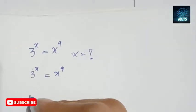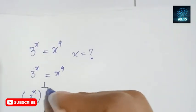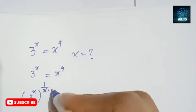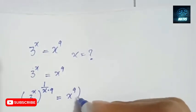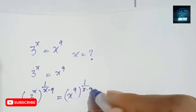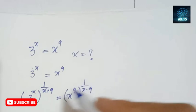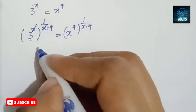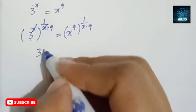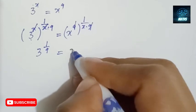I am going to take both sides to the power of 1 over (x times 9). So 3 to the power x, raised to the power 1 over (x times 9), equals x to the power 9, raised to the power 1 over (x times 9). On the left side, x and 9 cancel, leaving 3 to the power 1 over 9.